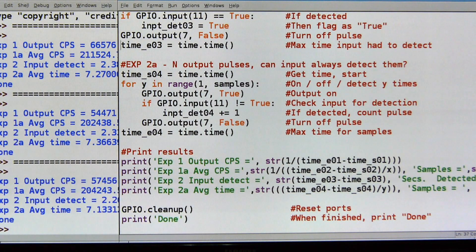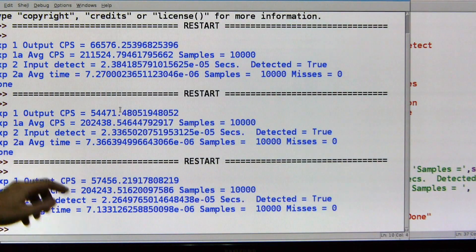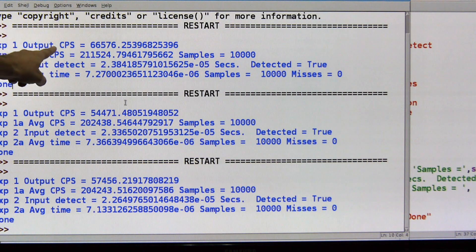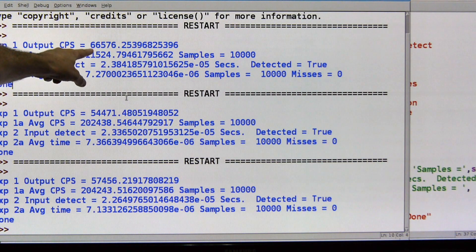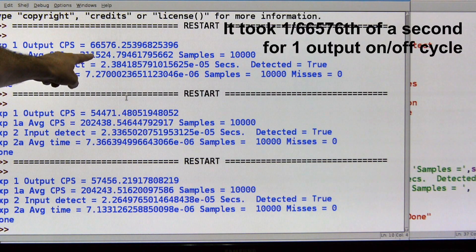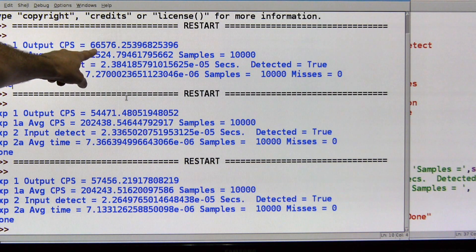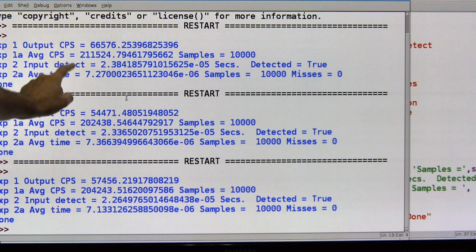So I've already run this, let me show you the results. The results are a little bit disturbing. I've got output cycles per second, so this is just that one hit on the output, so turn the output on and then off, one time. So the first experiment, or the first run through, if you will, 66,000 times.